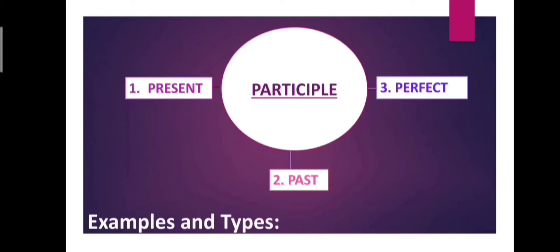In English language, there are three participles: present participle, past participle, and perfect participle.